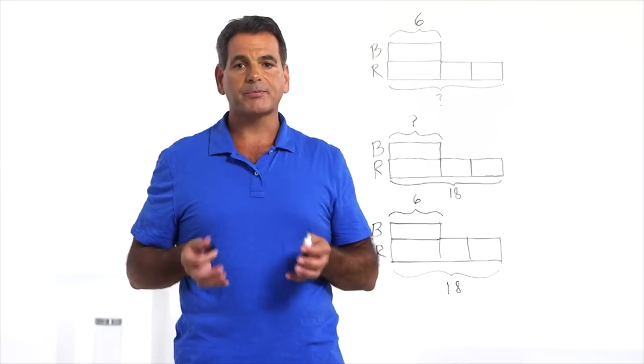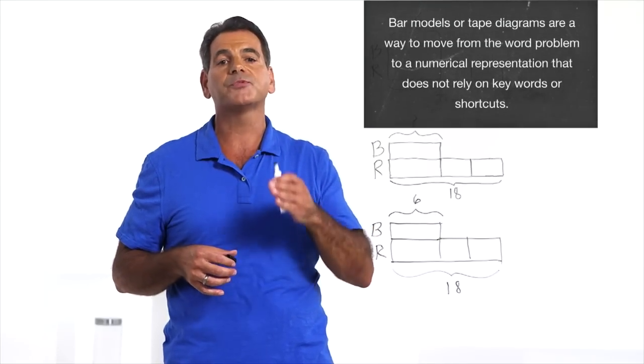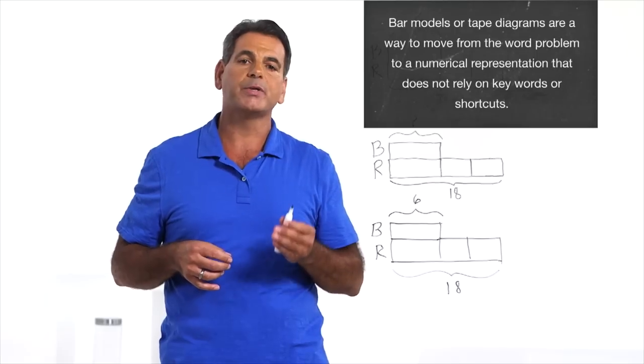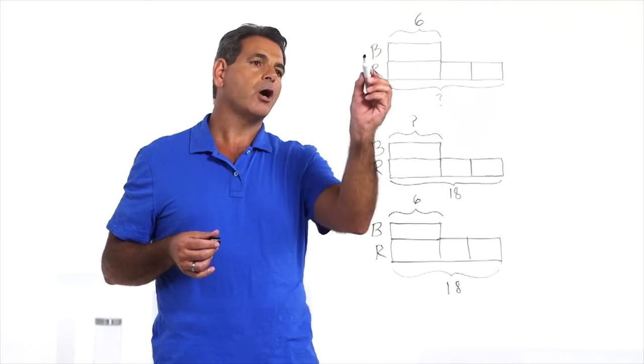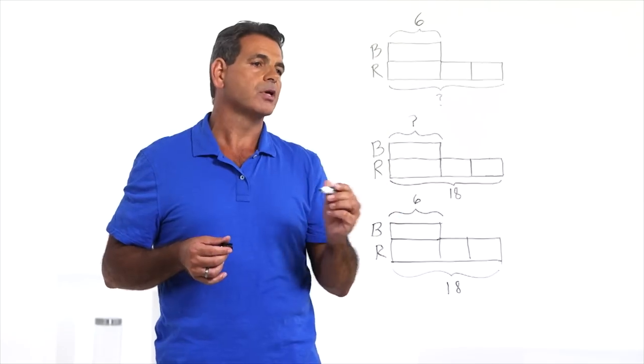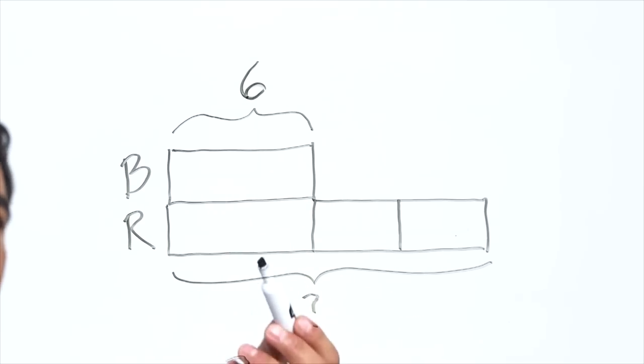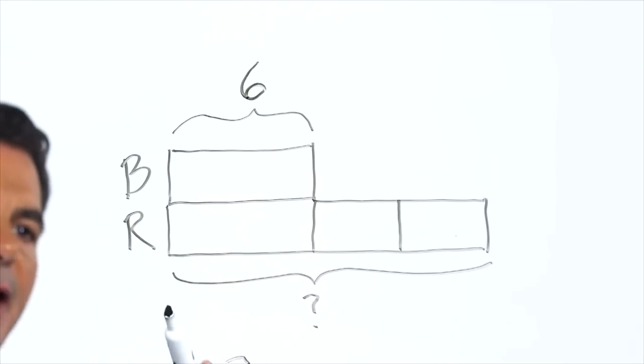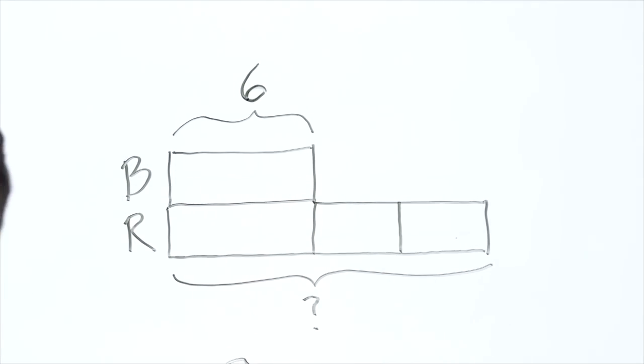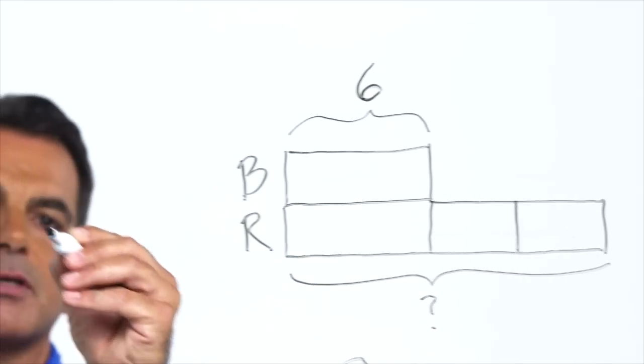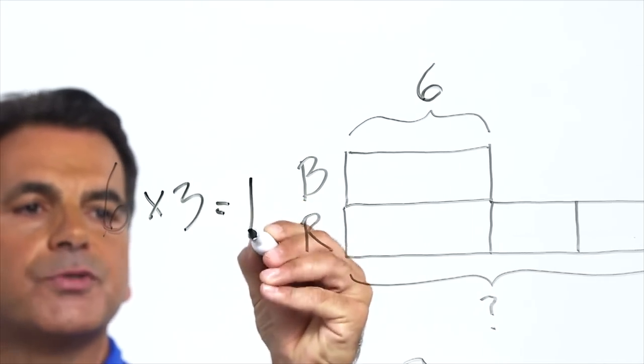Let's use bar models or tape diagrams to represent these three different problems and see how the model helps us determine which operation we need to use to solve it. Looking at the first problem, we know the blue hat costs $6. We want to find out how much the red hat costs. Looking at the model, we can see that the blue hat is 6, the red hat is 1, 2, 3 times as much as the blue hat. So we can write 6 times 3 equals 18.